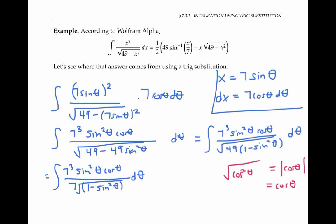In other words, if theta is between negative pi over two and pi over two, for example. I would really like to replace my square root of one minus sine squared theta by just cosine theta, not the absolute value of cosine theta. So I'm just going to assume that theta is between negative pi over two and pi over two when I make my substitution.